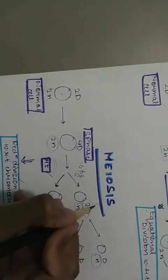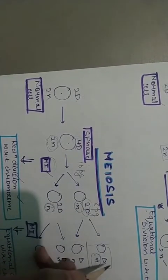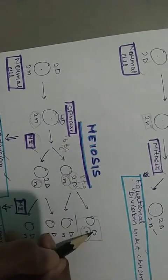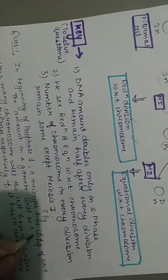16 pg is 4d. Meiosis 1 ke baad uske paas matlab half raha gaya to yahan pe raha gaya 8 pg. Or gamete to yeh wala bane ga na? To gamete ke paas kitna raha gaya? Yeh 2d se phir half ho gaya 4 pg. To is question ka answer kya hua? 4 pg.